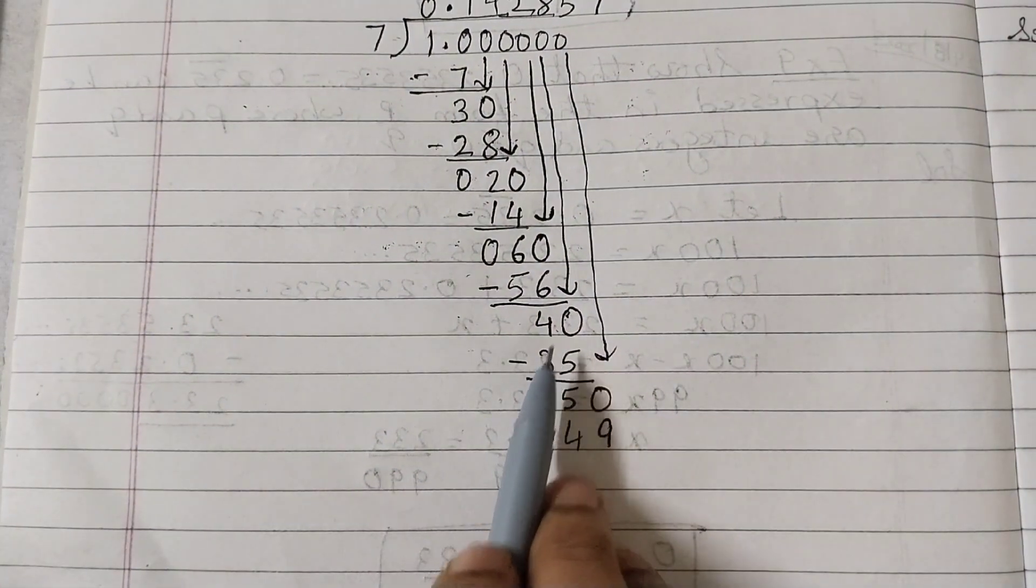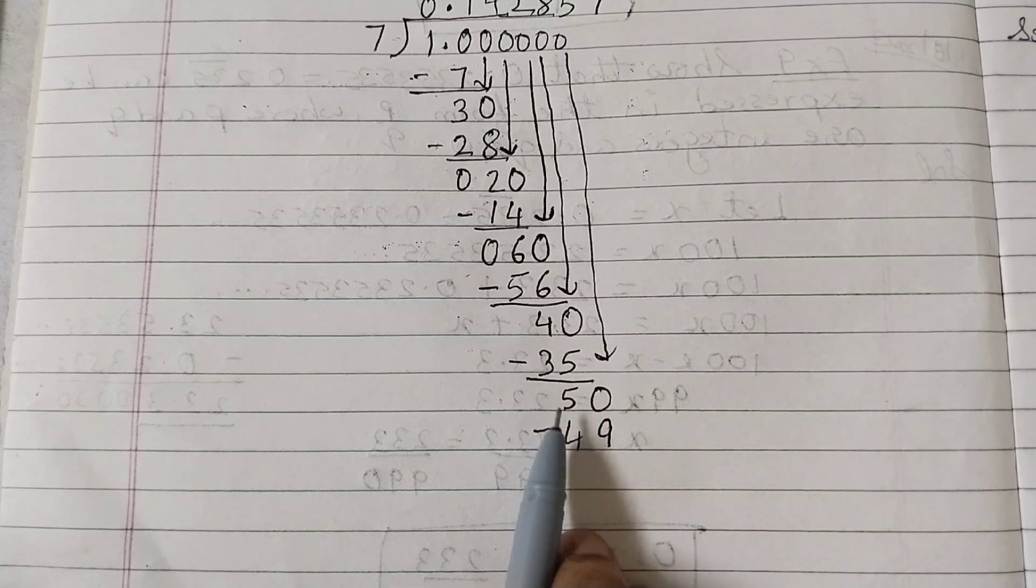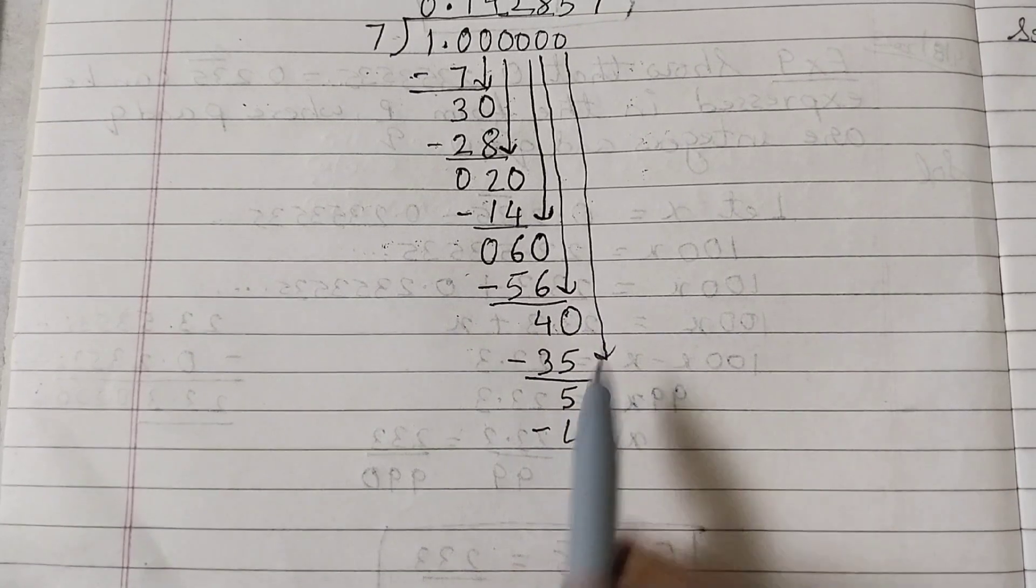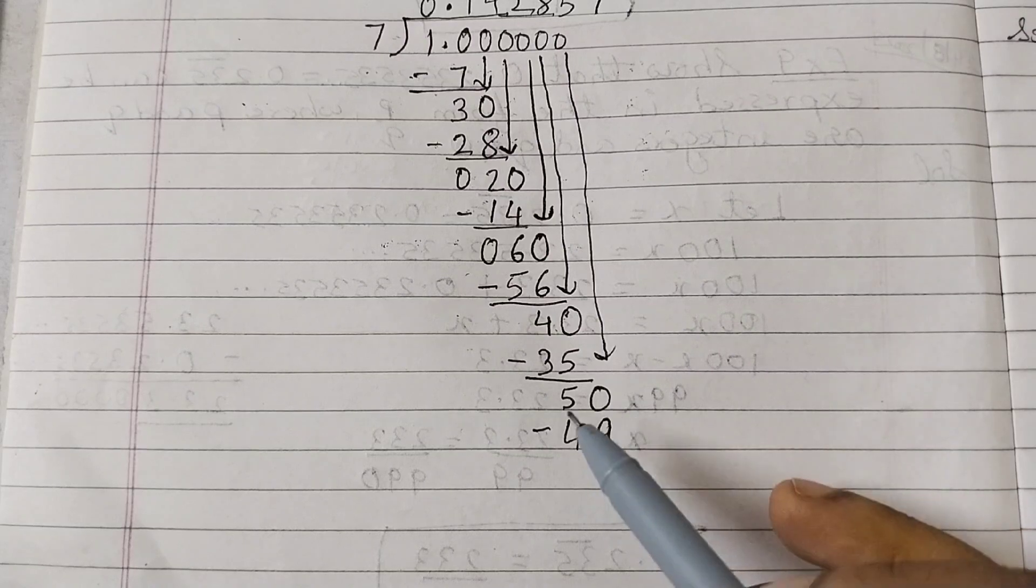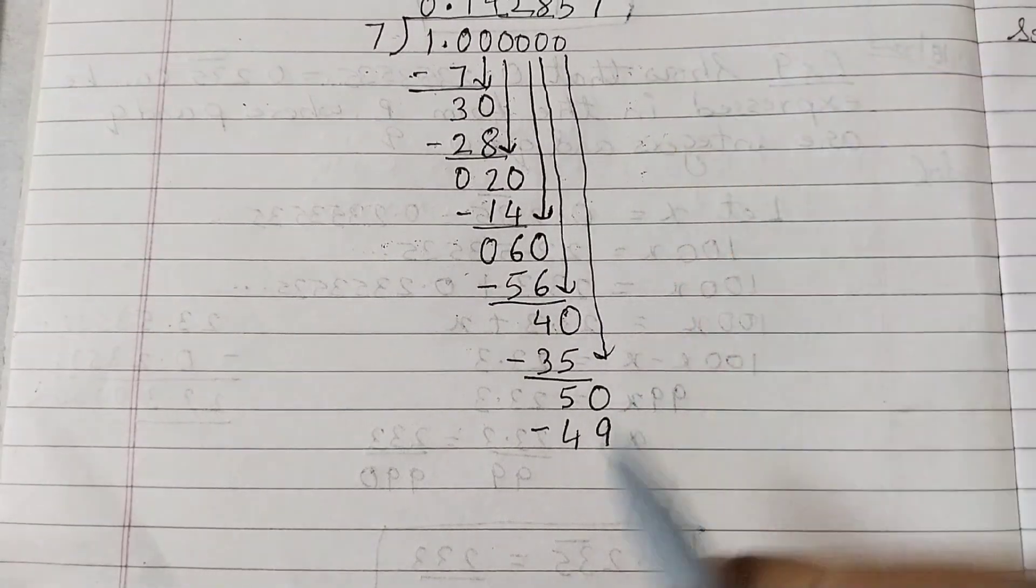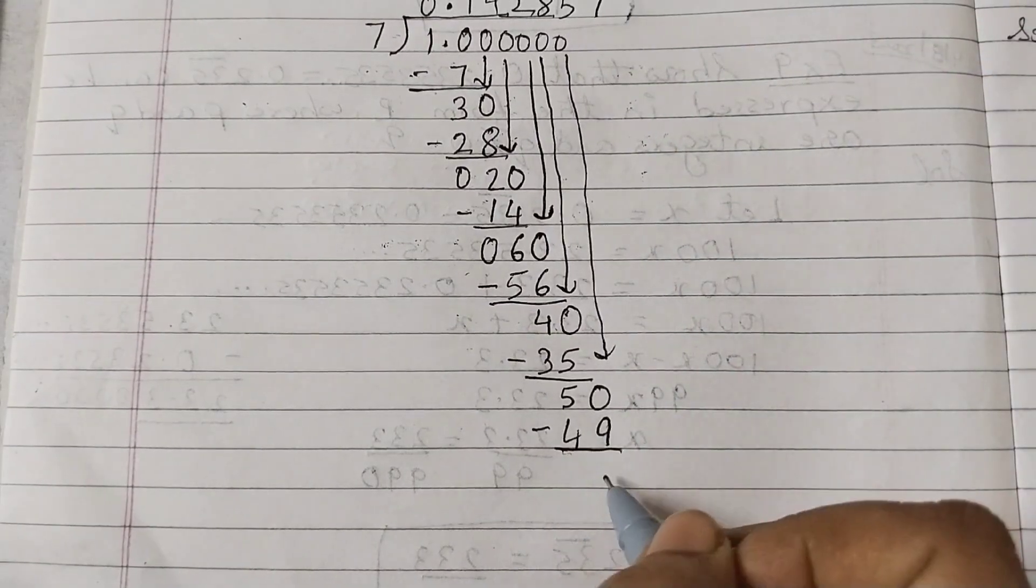7 times 7 is 49. So 40 minus 35, we got 5. Then we brought the 0 down. 7 times 7 is 49. Now we are getting a remainder as 1.